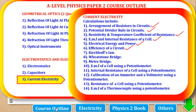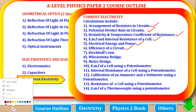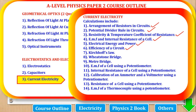We have already dealt with the calculations for parts 1, 2, 3, 4, and 5. Now we are going to part 6, which is Efficiency of a circuit or an electrical circuit.